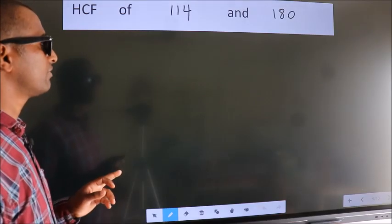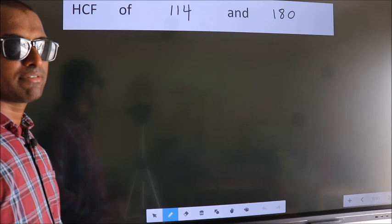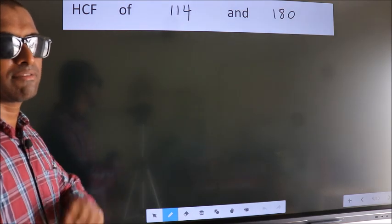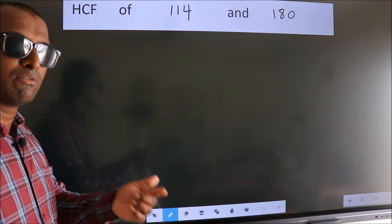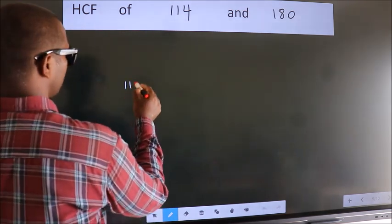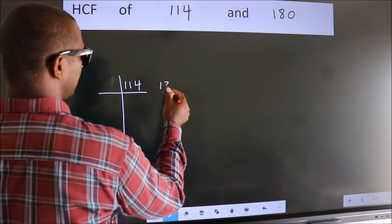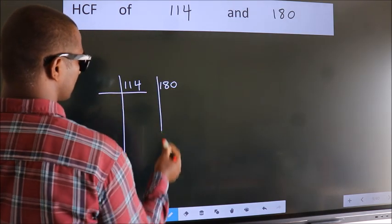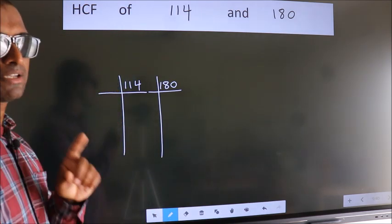HCF of 114 and 180. To find the HCF, we should do the prime factorization of each number separately. What I mean is, see, 114 here, 180 here. This is your step 1. Next.